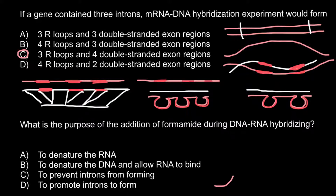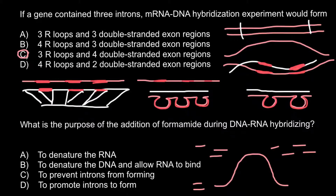Imagine a graph that shows the temperature needed for double-stranded DNA to become single-stranded. At a certain temperature — usually over 90 degrees Celsius — double-stranded DNA separates into single strands. However, the formation of double-stranded DNA occurs at a lower temperature than denaturation, so the graph for re-formation would look shifted to lower temperatures.